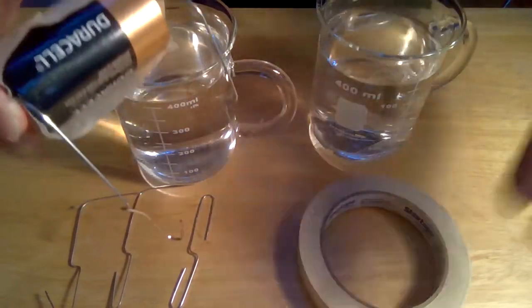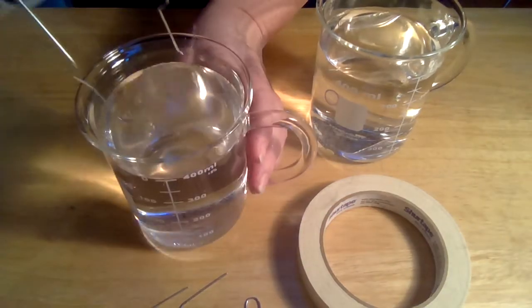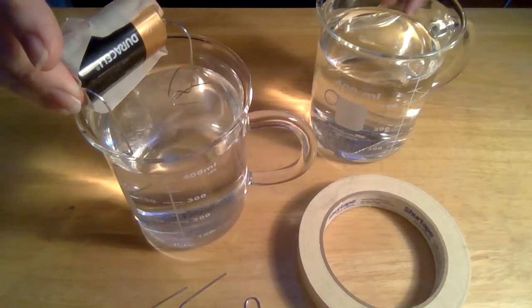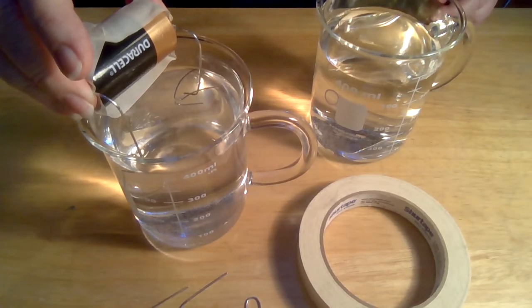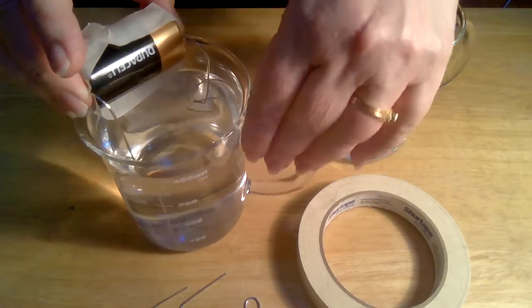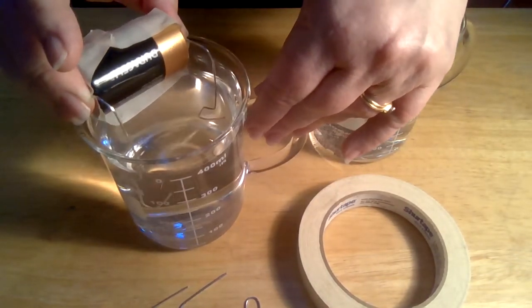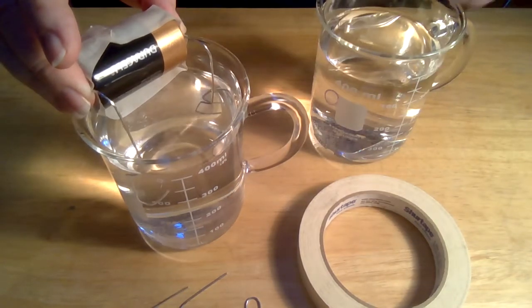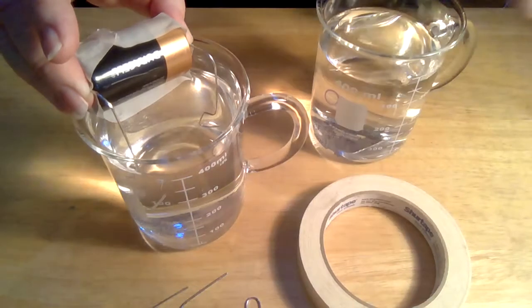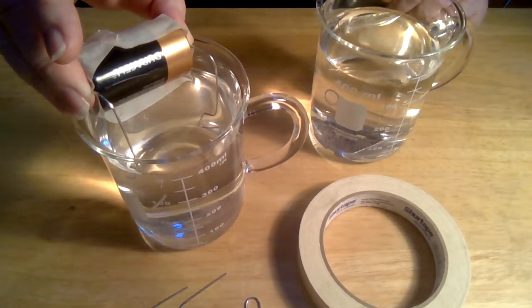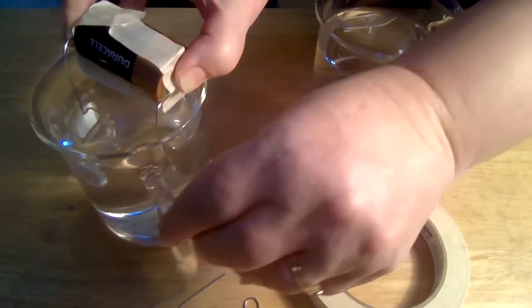Now all you do is take this—this is your gas generator you could call it—and you're going to lower it into the salty water. My two hooks are totally submerged. I'm not sure if I can get a shot of it for you, but one of these is already bubbling. The one closest—if you can see it through the glass—the one closest to the camera is already bubbling a lot, while the one that's furthest from the camera isn't.